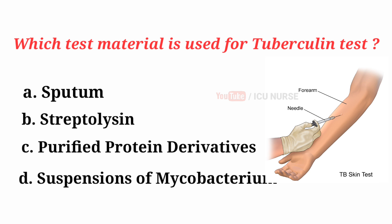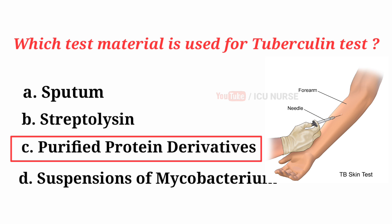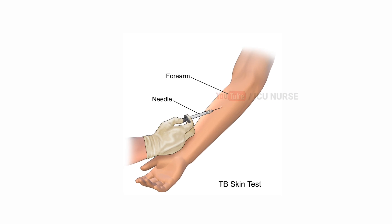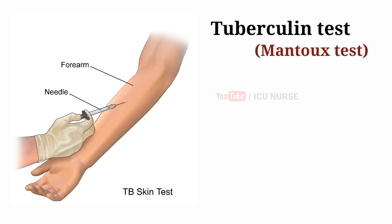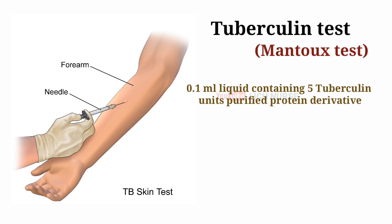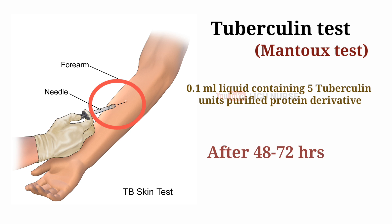Which test material is used for the tuberculin test? The correct answer is C, Purified protein derivatives. The standard recommended tuberculin test is the Mantoux test, which is administered by injecting 0.1 ml of liquid containing 5 tuberculin units into the top layers of the skin of the forearm. Doctors should read tests 48 to 72 hours after the injection.